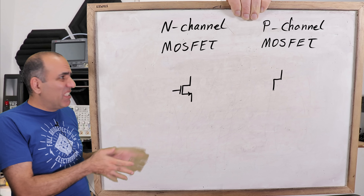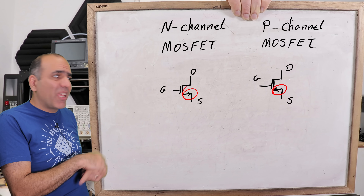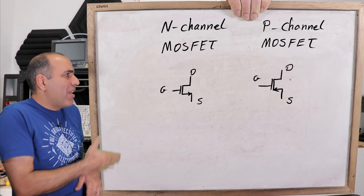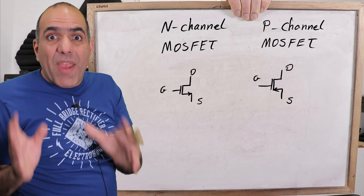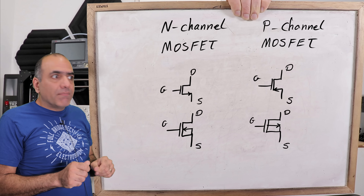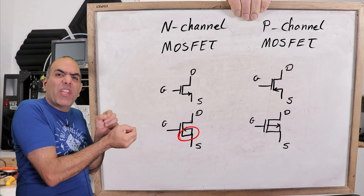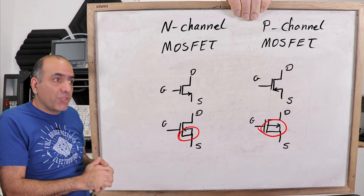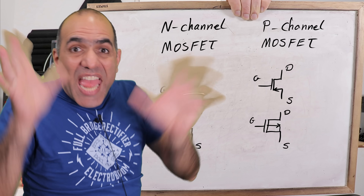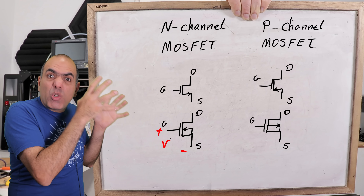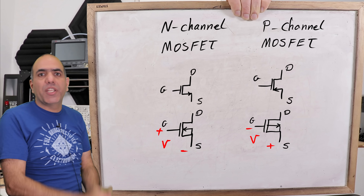We have N-channel and P-channel MOSFETs with basic symbols, with arrows on the source differentiating between the types. The updated symbols are a bit more confusing, but they also show the substrate tied to the source terminal. N-channel requires a positive gate-source voltage to turn on, and P-channel requires a negative gate-source voltage.